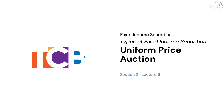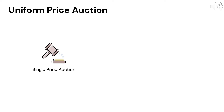Let us move on to our next topic, the Uniform Price Auction for U.S. Treasury Securities. In this lecture, we will focus on learning how the primary auction for Treasury Securities actually works. We will go through a mathematical illustration of an auction so that you understand the detailed mechanics of the auction. The auction for U.S. Treasuries is conducted through a single price auction method, also called the Uniform Price Auction Method.